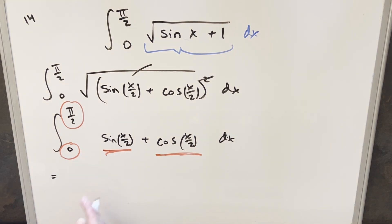Go ahead and just integrate this. The integral of sine x over 2 is going to be minus cosine x over 2. But then I need to bring a 2 out front for that one half. And then integral of cosine x over 2, that's just going to be sine x over 2. Bring a 2 out front. And we just need to evaluate from 0 to pi over 2.